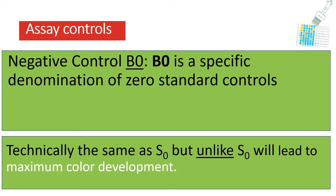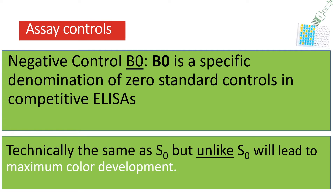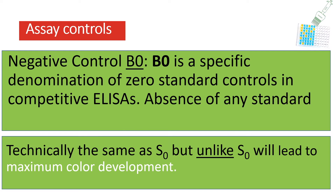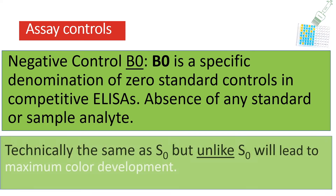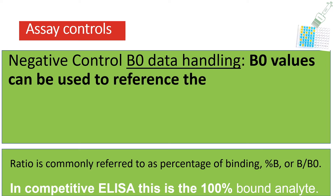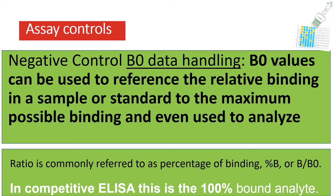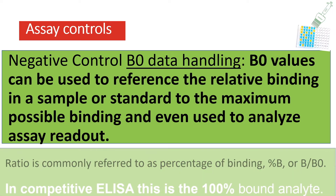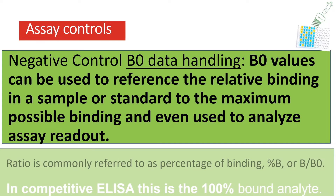In a competitive ELISA, B₀ has no standard in the well, so you get maximum color development because the conjugated analyte faces no binding competition and maximal conjugate binding is achieved. B₀ communicates maximum color development and is used to control for full functionality of all assay components. It may generate results above the maximum detection range. The B₀ value is used to reference relative binding of a sample or standard to maximum possible binding, producing a ratio commonly referred to as percent binding or B/B₀. It is therefore recommended to include B₀ controls in every competitive ELISA.